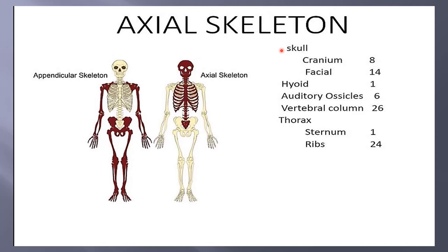Looking at the axial skeleton, we have the skull, which includes cranium and facial bones. The cranium bones are unpaired and paired. In the unpaired we have occipital, frontal, sphenoid, and ethmoid, and in the paired we have temporal, parietal, and lacrimal bones.